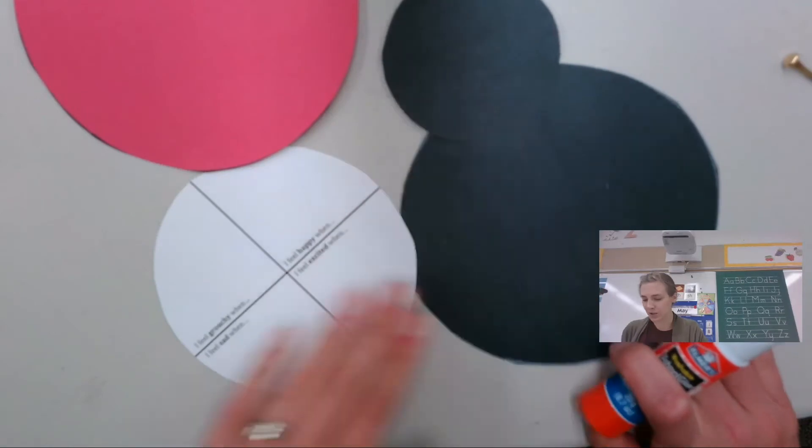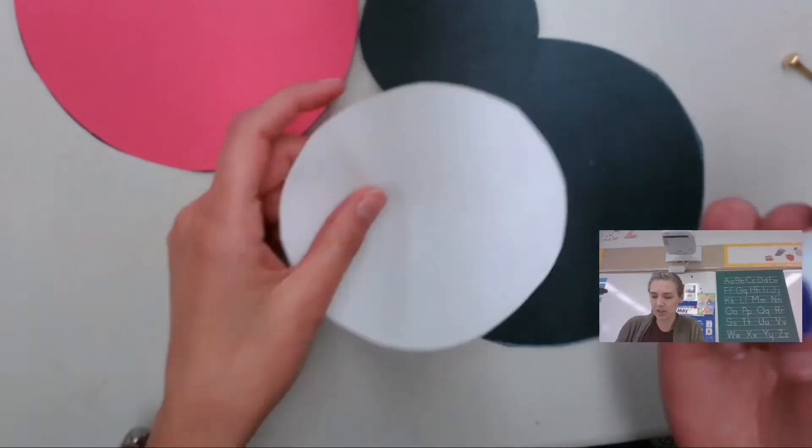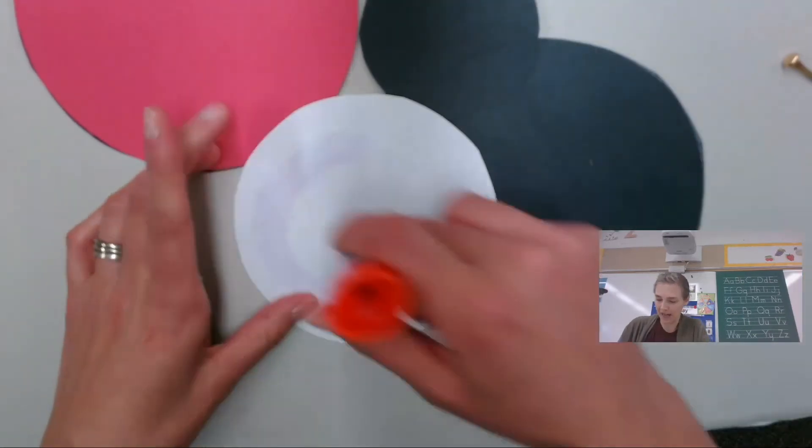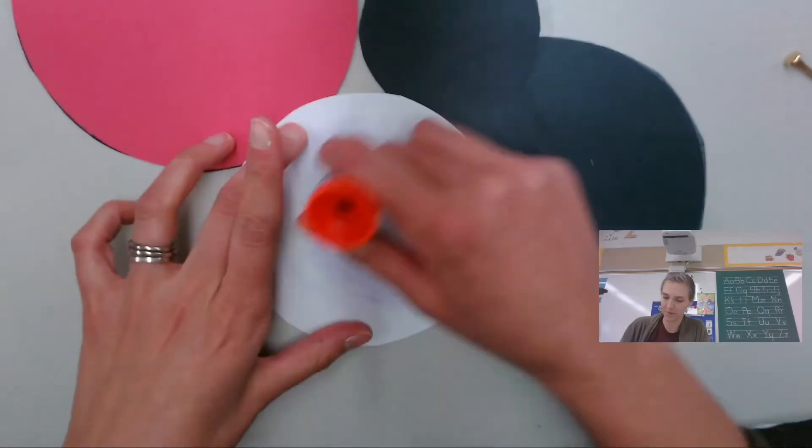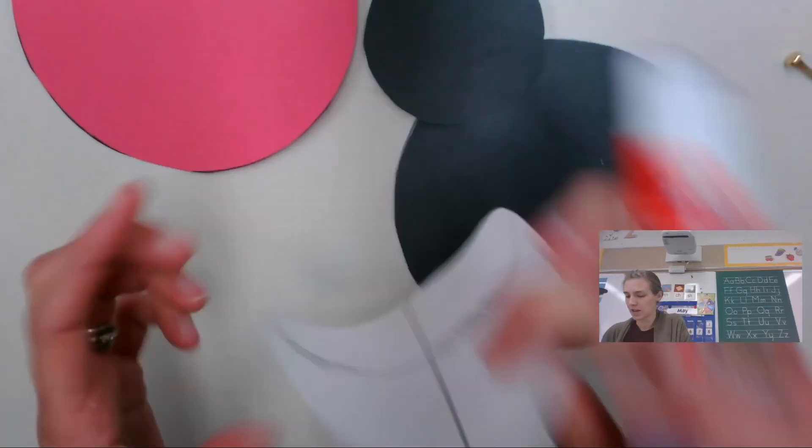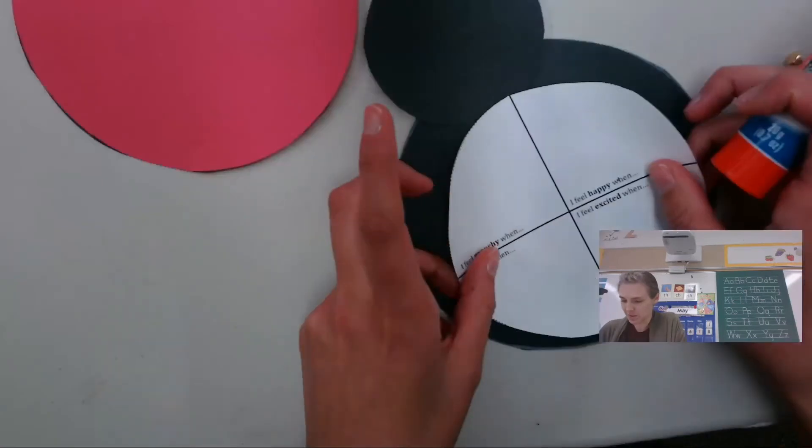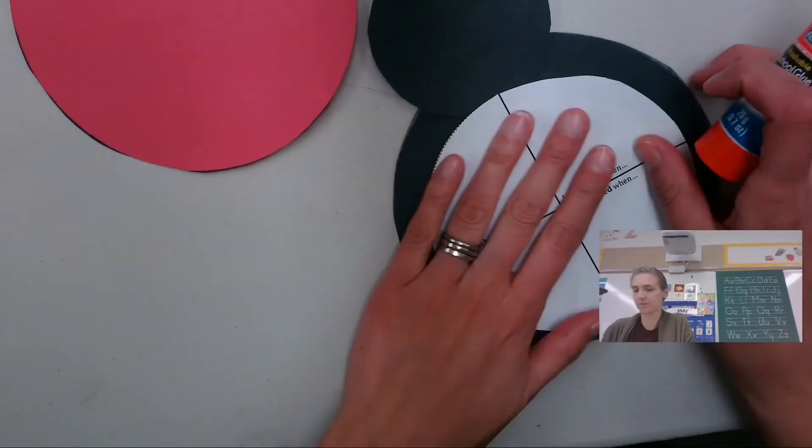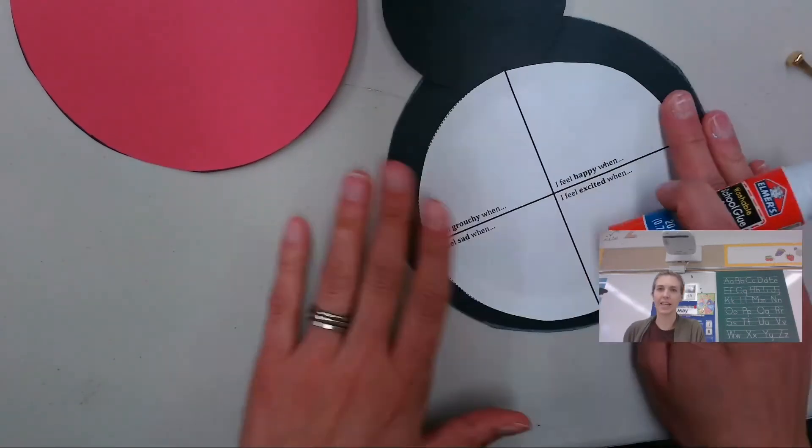Then what you're going to do is you're going to take the white circle. You're going to put glue on the back of it. Lots of glue on. Then you're going to put that in the middle of the big black circle. Just like that.